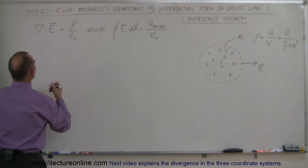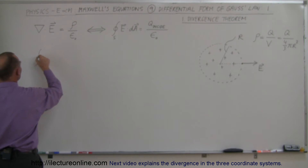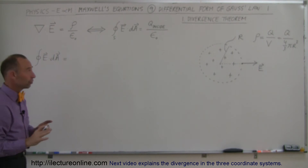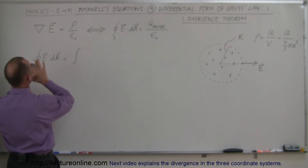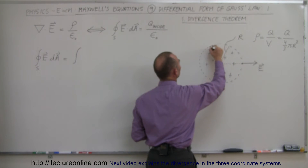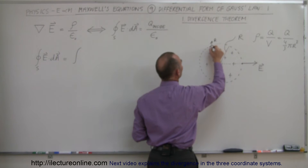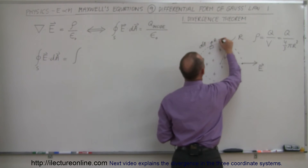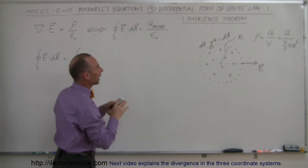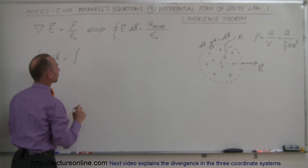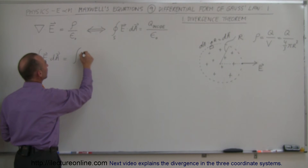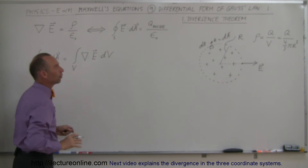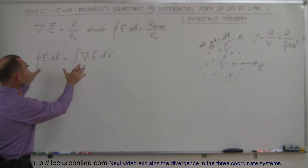The divergence theorem states that if we take the surface integral of E dot dA, that is exactly equal to the volume integral of the divergence of the electric field times dV. So this is the surface integral where we integrate a small surface element dA — there's a normal vector n, and this small dA multiplied by the normal vector equals the vector dA. If we integrate that over the entire surface, the divergence theorem says that equals the volume integral of the divergence of the electric field times dV. We're not going to prove the divergence theorem here, but we know these are equal to each other.